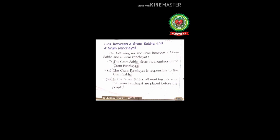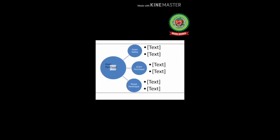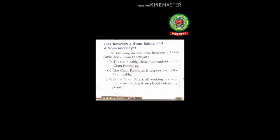Let's start reading at page 108: Link Between a Gram Sabha and a Gram Panchayat. First look at this picture. You will see the Gram Panchayat, which is the first tier of the Panchayati Raj system. The Gram Panchayat is further divided into three parts: number one, Gram Sabha; number two, Gram Panchayat; and number three, Nyay Panchayat. In previous classes we read about the first two parts; now we are going to read about the similarities and differences between Gram Sabha and Gram Panchayat.